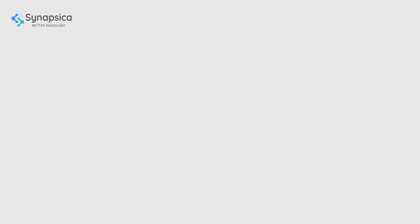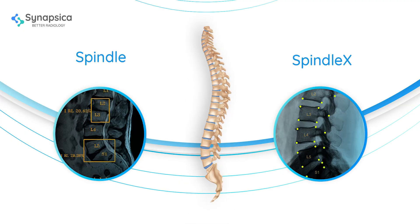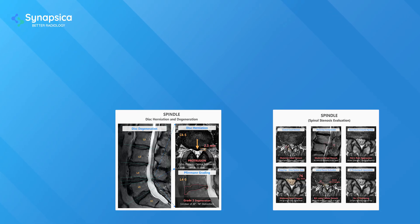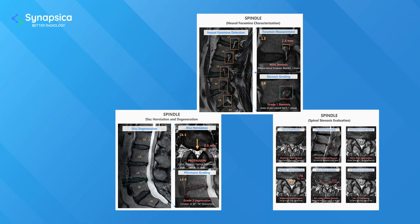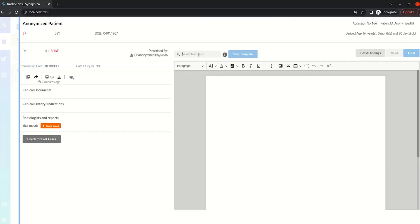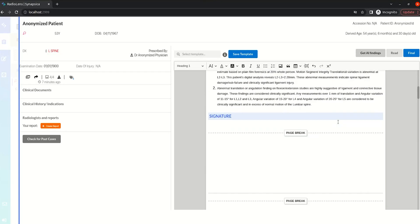And the best part is that Radiolens is integrated with an AI reporting tool that provides quantitative and qualitative reports on various pathologies of the spine, making report generation a lot quicker.